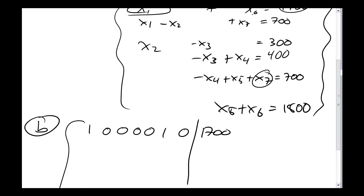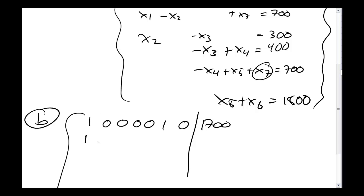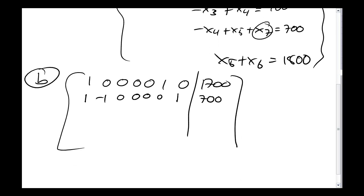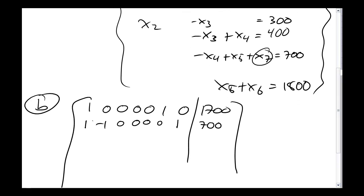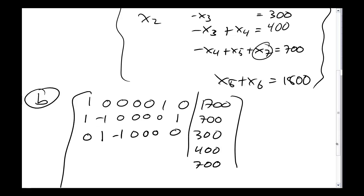For my second row I have 1 for x1, negative 1 for x2, then zeros until x7, with 700 on the right. I'm going to keep filling in this matrix. The next row has x2 and x3 with negative 1, everyone else 0s, equaling 300. Then I'll have 400, 700, and lastly 1800 for the remaining rows.